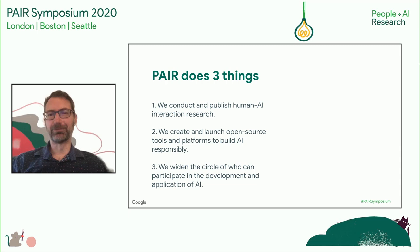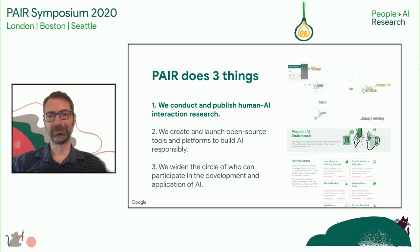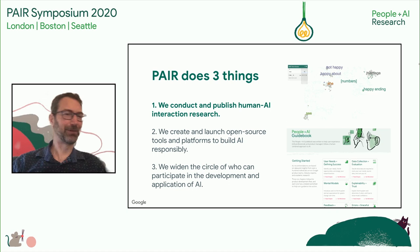To describe a little bit more about what we do, we think about this in three respects. One thing is that we conduct and publish human-AI interaction research. We do this through papers — please go to our website, we've got a lot of good stuff there.